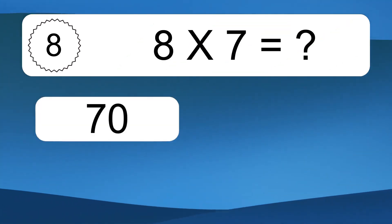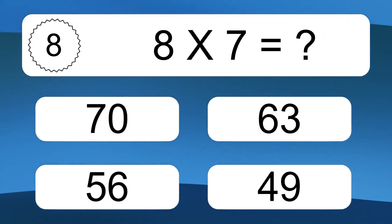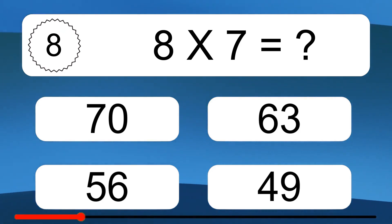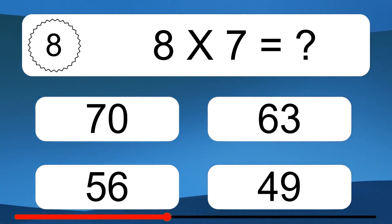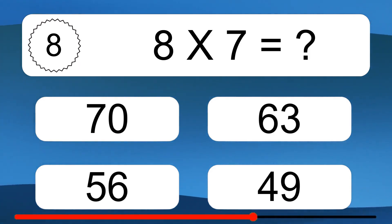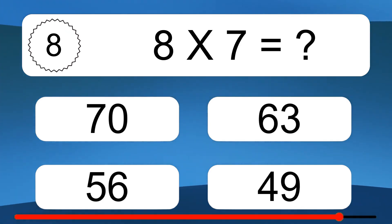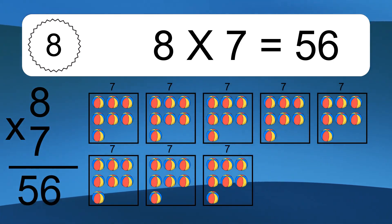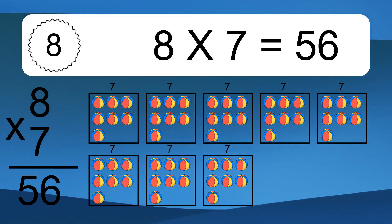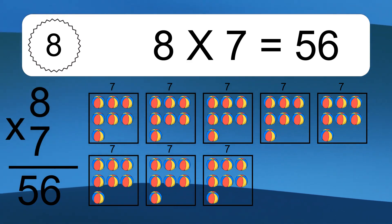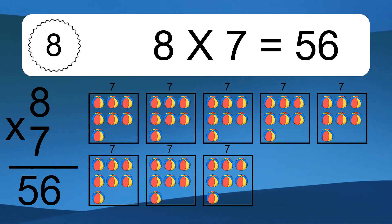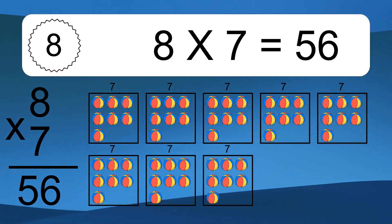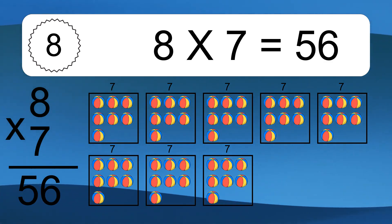8 times 7 equals what? 8 times 7 equals 56. We have 8 boxes, and each box has 7 colorful balls inside. If you count all the balls in all the boxes together, you will have 8 times 7 balls. This equals 56 balls.